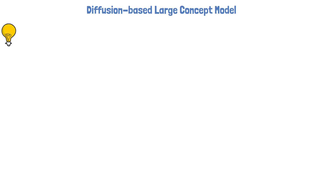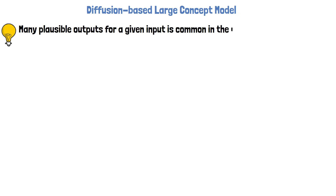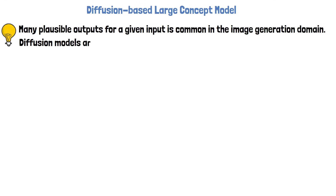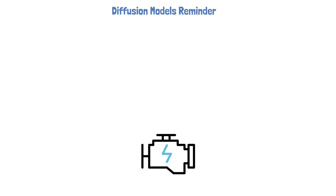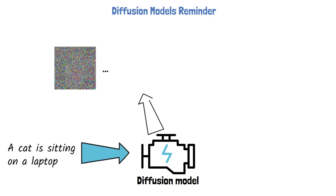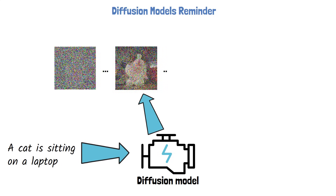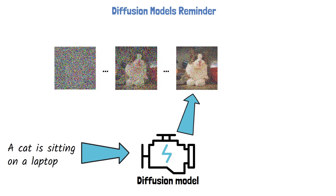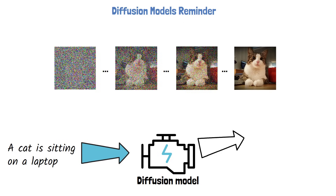The challenge of having many plausible outputs for a given input has already been tackled in the image generation domain. For example, if we ask an image generation model to generate a cute cat, we will likely be satisfied with many different generated options. A widely used architecture for image generation is the diffusion model. Diffusion models take a prompt as input — such as 'a cat is sitting on a laptop' — and learn to gradually remove noise from an image to generate a clear image. The model starts with a random noise image and at each step removes some noise, conditioned on the input prompt, until it produces a clear final image.